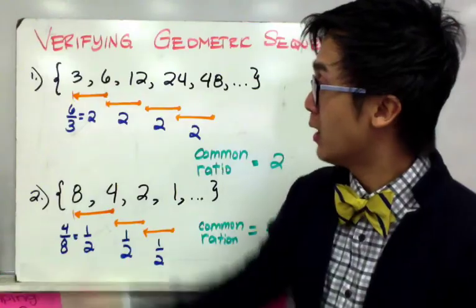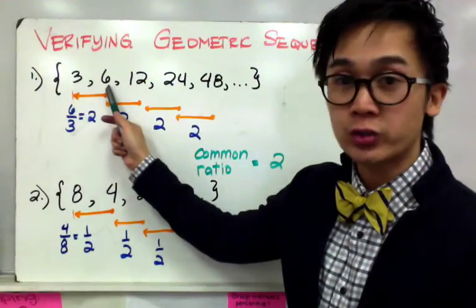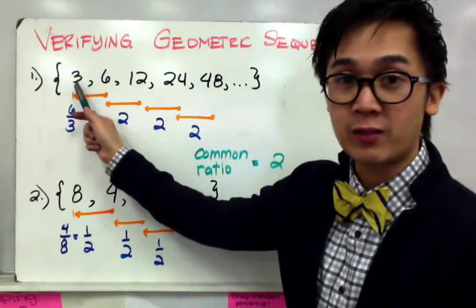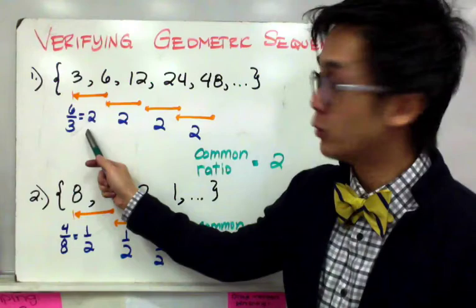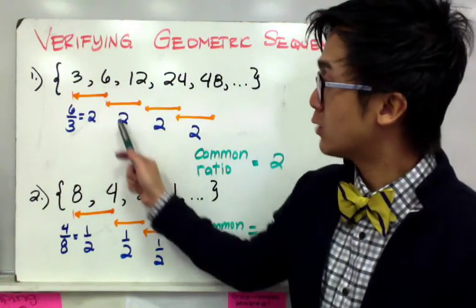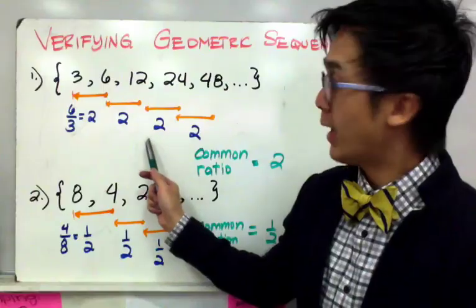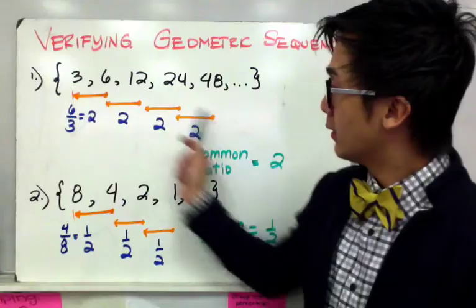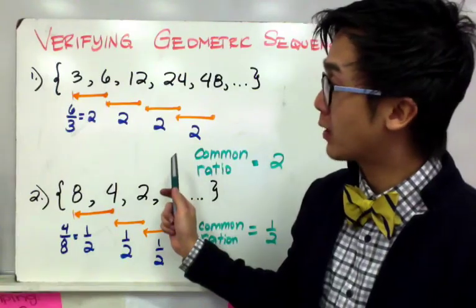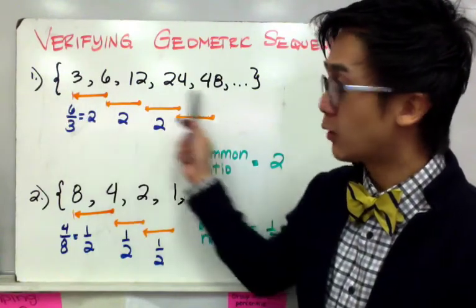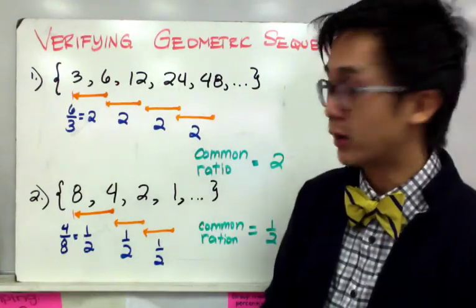So for the first pair we have 6 and 3, so simply divide the second term by your first term to get the common ratio. So 6 divided by 3 will give us 2, 12 divided by 6 will give us 2, 24 divided by 12 will give us 2. And if you'll notice our quotients are all consistently equal to 2. So that means we have a common ratio for this sequence, so therefore number 1 is verified to be a geometric sequence.